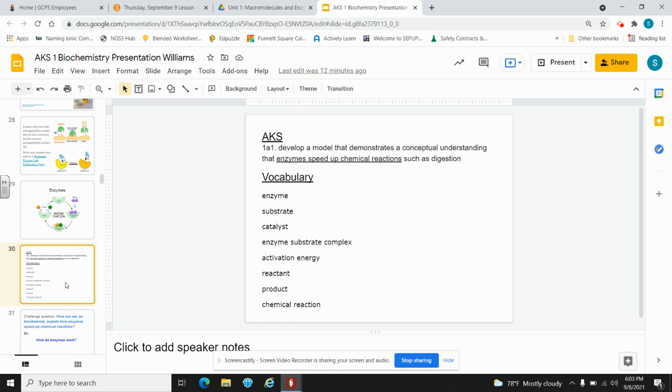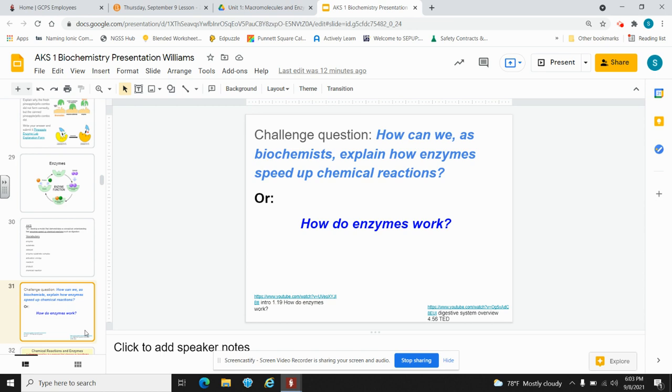As you can see from the AKS, enzymes, special proteins, that speed up chemical reactions. And the AKS specifically includes digestion as a process that enzymes speeds up. So we're going to sort of back up to seventh grade and talk about the digestive system just so we have how that system works in the back of our minds.